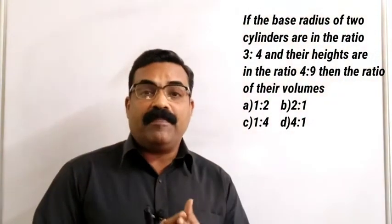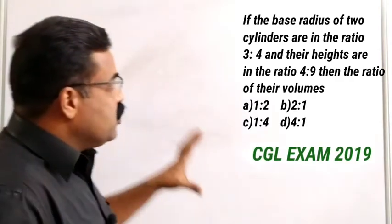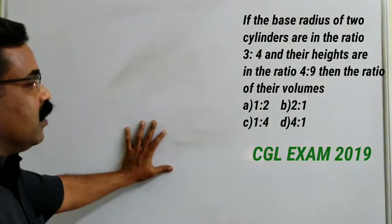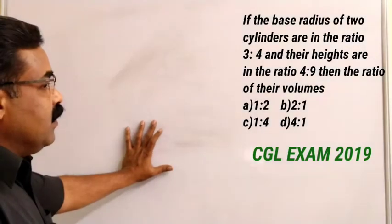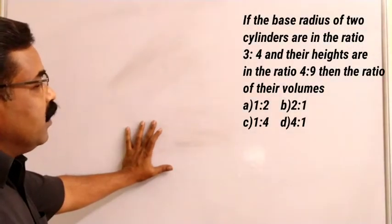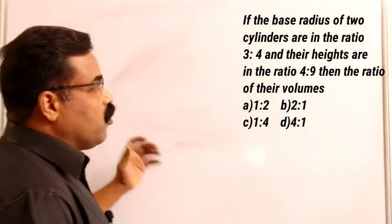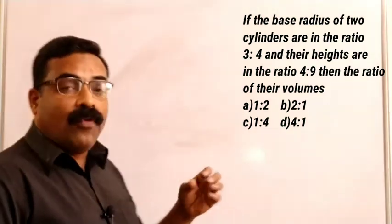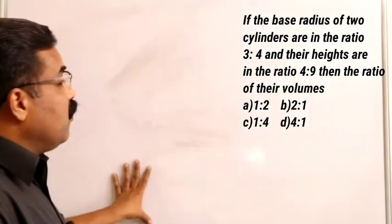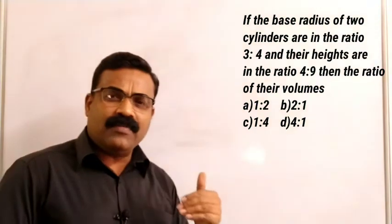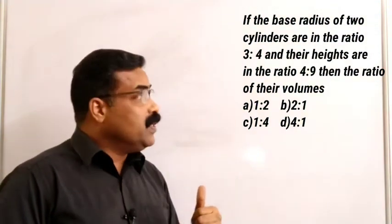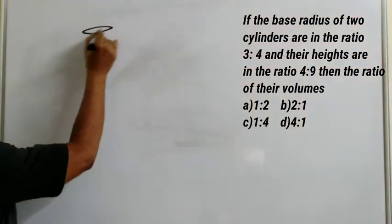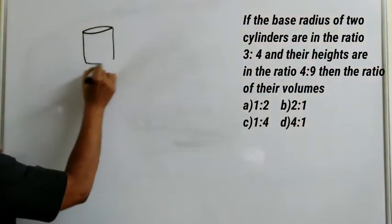All questions are from the 2019 previous paper. The next question: if the base radii of two cylinders are in the ratio 3:4 and their heights are in the ratio 4:9, then the ratio of their volumes will be what? We need to find the ratio of the volumes. Let us draw two cylinders.